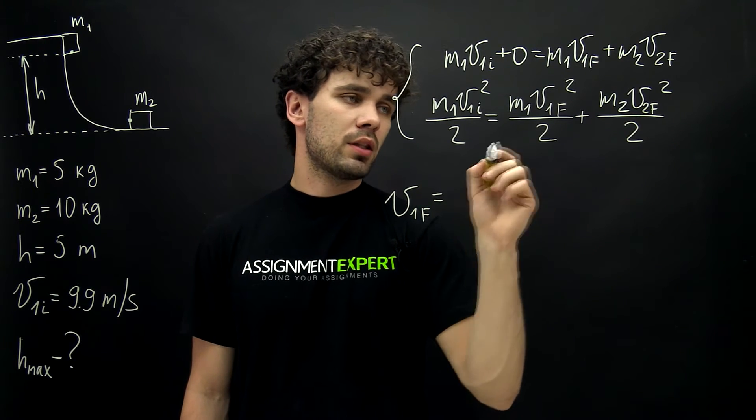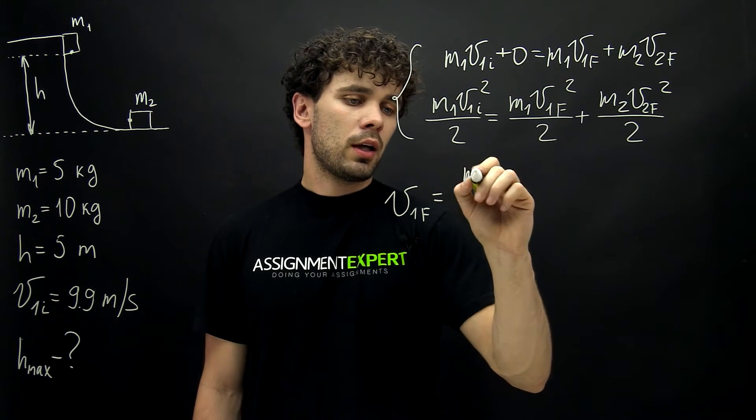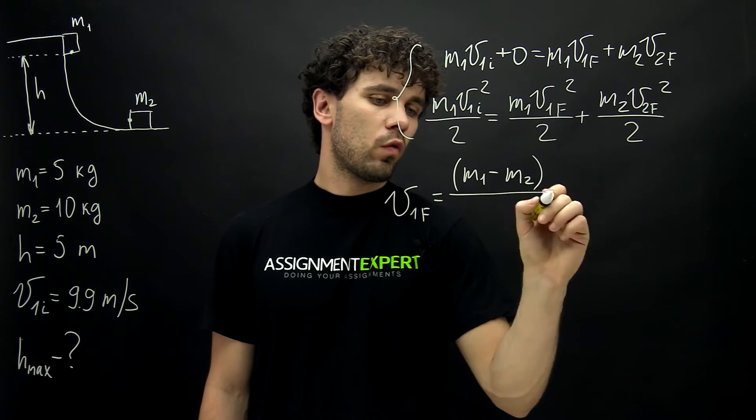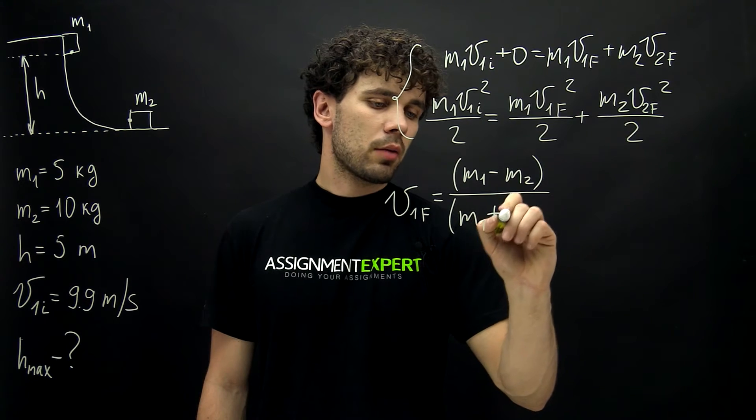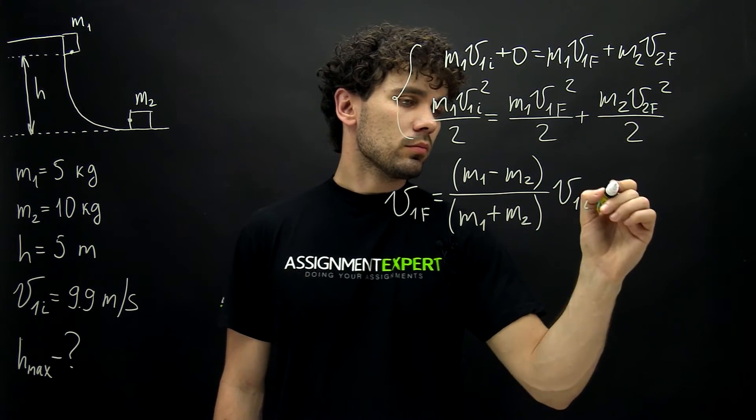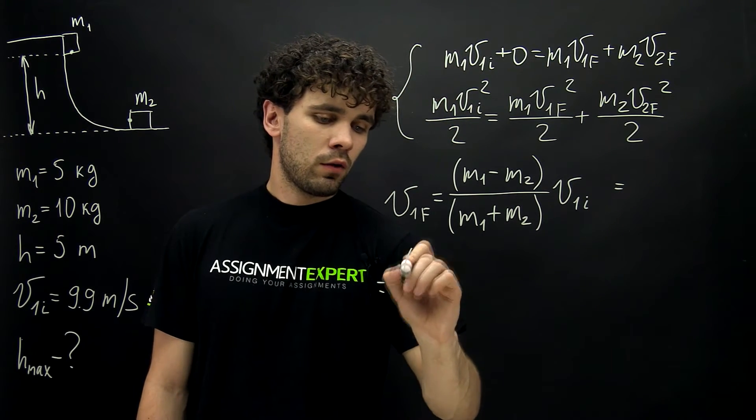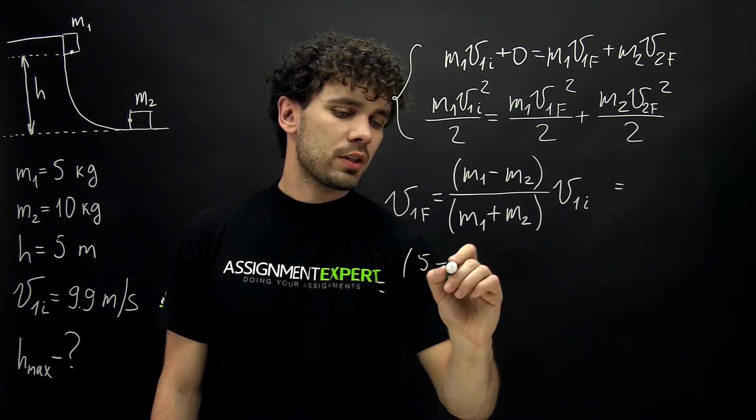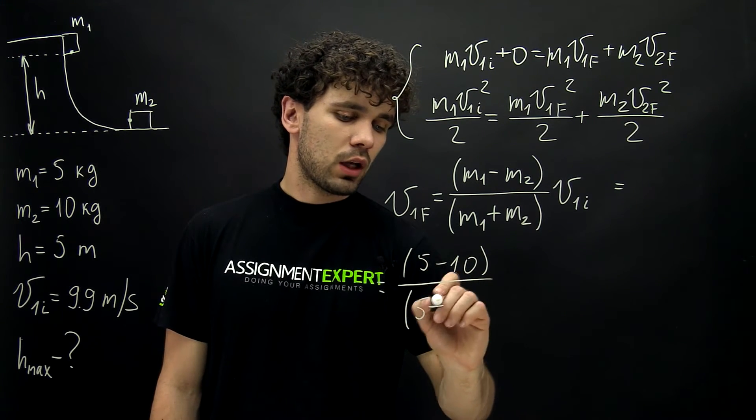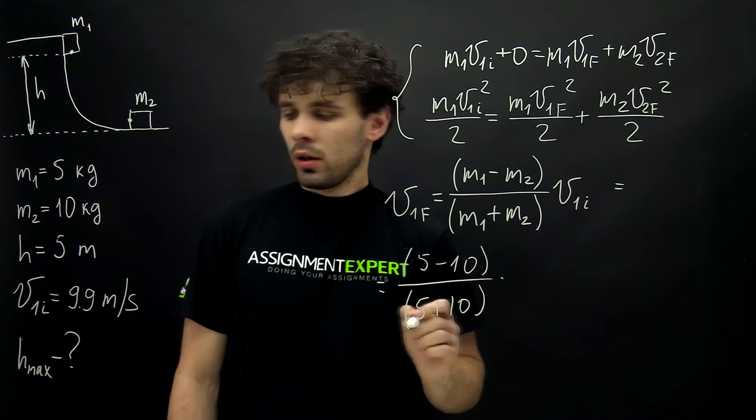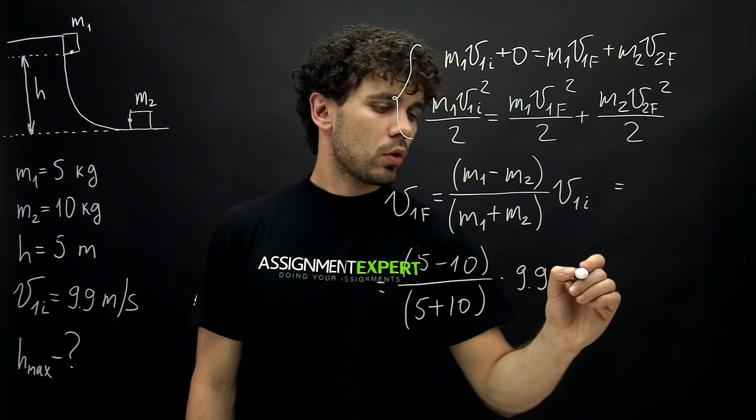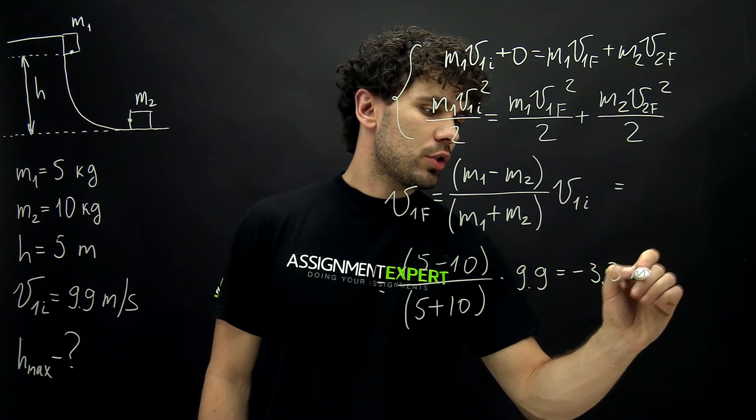V1f from this system equals m1 minus m2 over m1 plus m2 times v1 initial. And this is equal to 5 minus 10 over 5 plus 10 times 9.9. And this is equal to negative 3.3 meters per second.